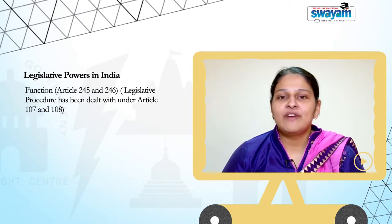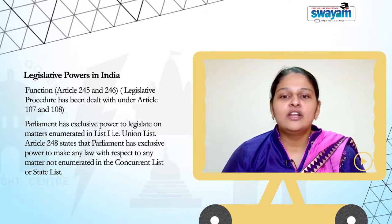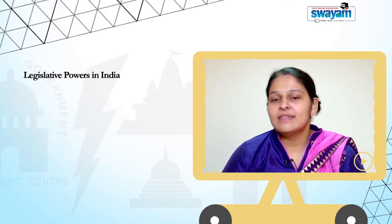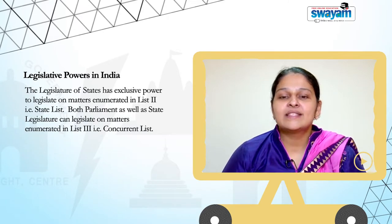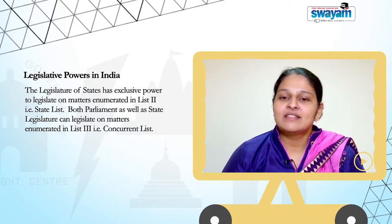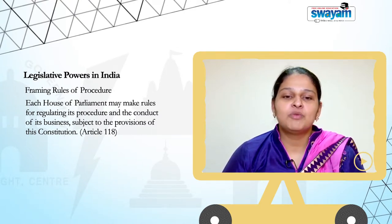Under Articles 245 and 246, Parliament has exclusive power to legislate on matters enumerated in List 1, i.e., the Union List. In the same manner, the legislature of the state has exclusive power to legislate on matters enumerated in List 2, i.e., the State List. Both Parliament as well as State Legislature can legislate on matters enumerated in List 3, i.e., the Concurrent List. Each House of Parliament may also make rules for regulating its procedure and the conduct of its business, subject to the provisions of the Constitution.